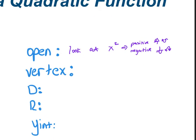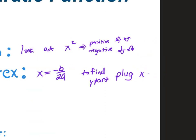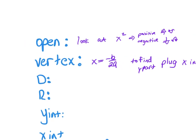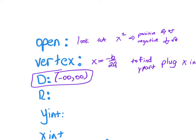To find the vertex, you find the x part using x equals negative b over 2a. Then to find the y part of your vertex, you plug your x value into the equation. The domain for every single quadratic function you will ever talk about in your life is negative infinity to positive infinity. If you get that wrong on a test or quiz, I'm going to be so mad at you.